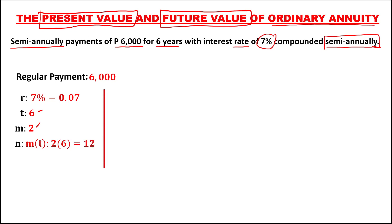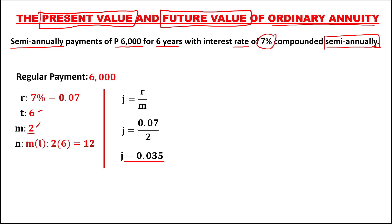To find the interest per period, J equals the rate divided by the compounding period. So J equals 0.07 divided by M, which is 2. Therefore J is equal to 0.035.